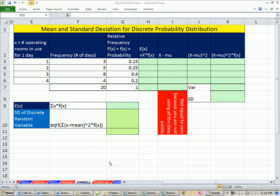Welcome to Excel 2010 statistics, video number 47. If you want to download this workbook, business210chapter5.xlsm, click on the link below the video. We're going to start on the sheet EVSD, Expected Value Standard Deviation. We've got to talk about the mean and standard deviation for a discrete probability distribution.